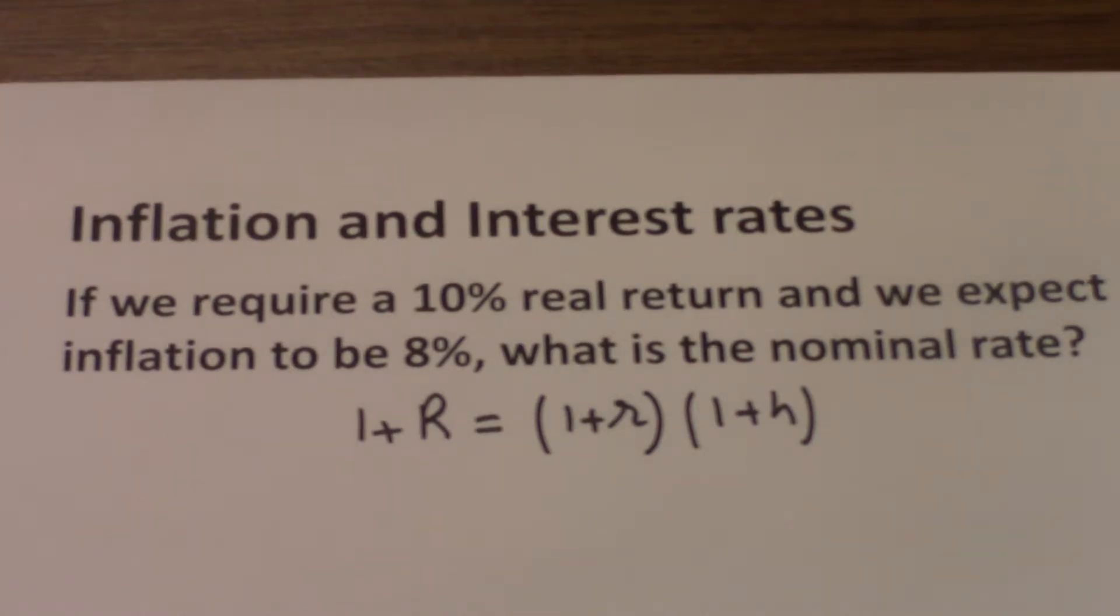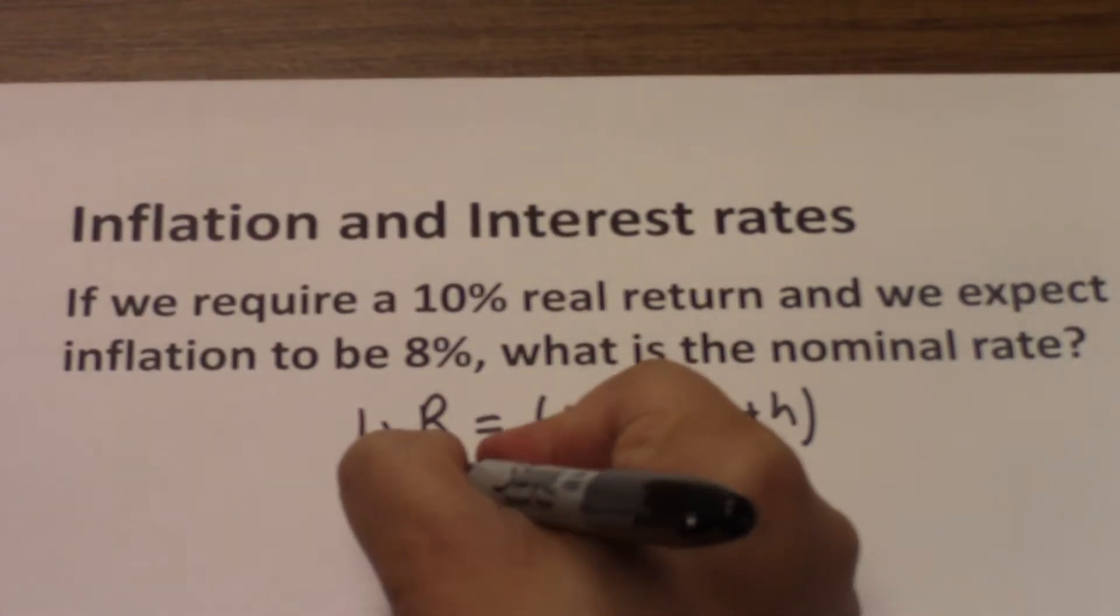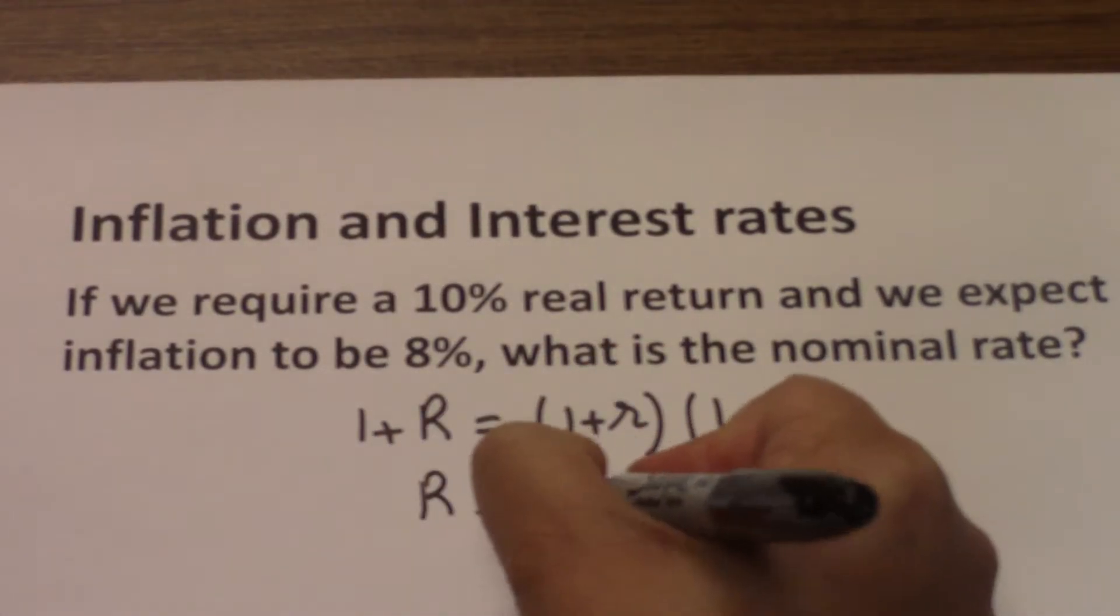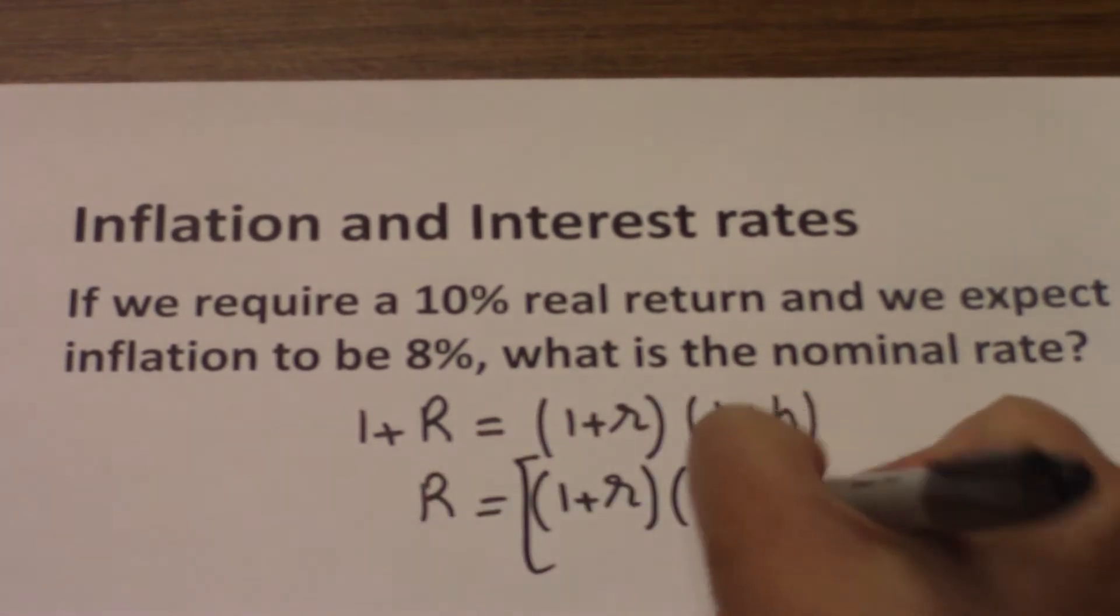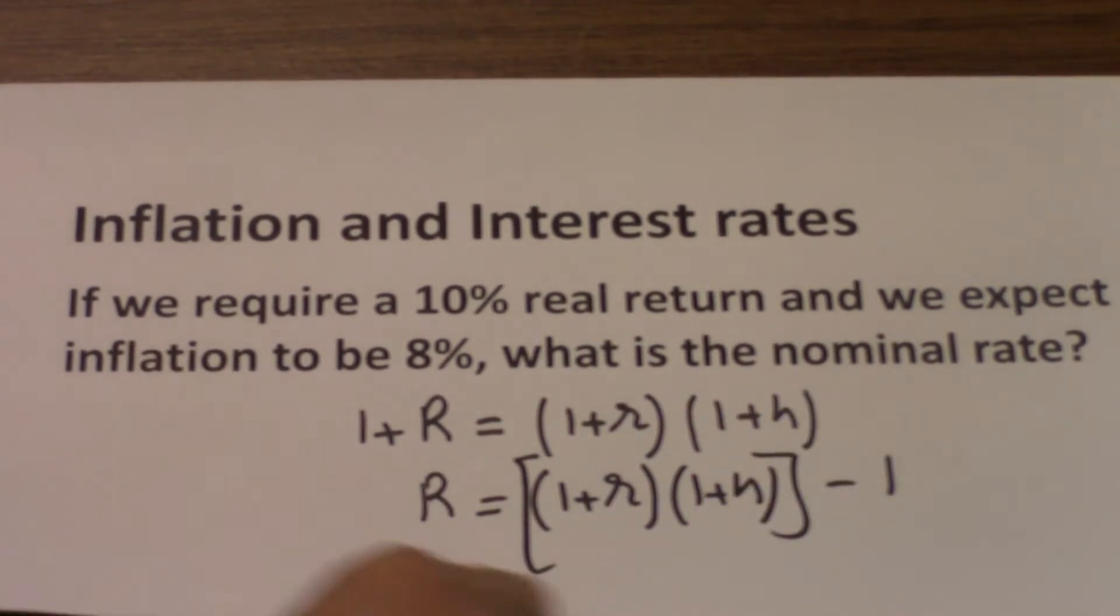Here we can just rearrange the formula and we are able to answer the question about what is the nominal rate. The nominal rate, big R, equals 1 plus small r times 1 plus h minus 1. I just took this 1 and moved it to the other side.